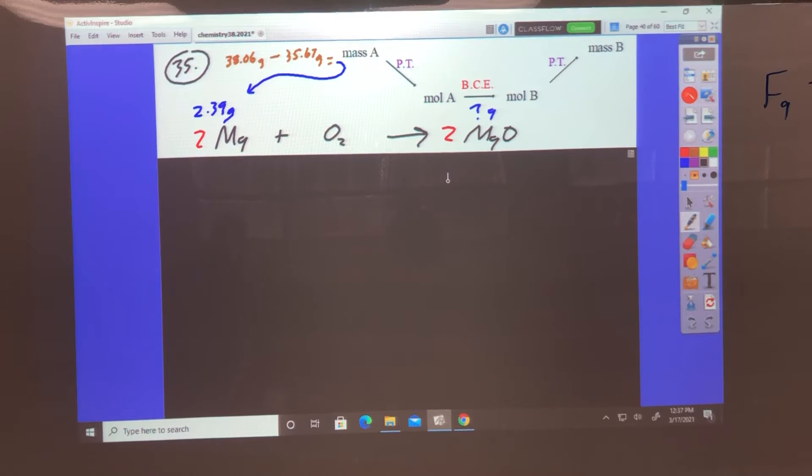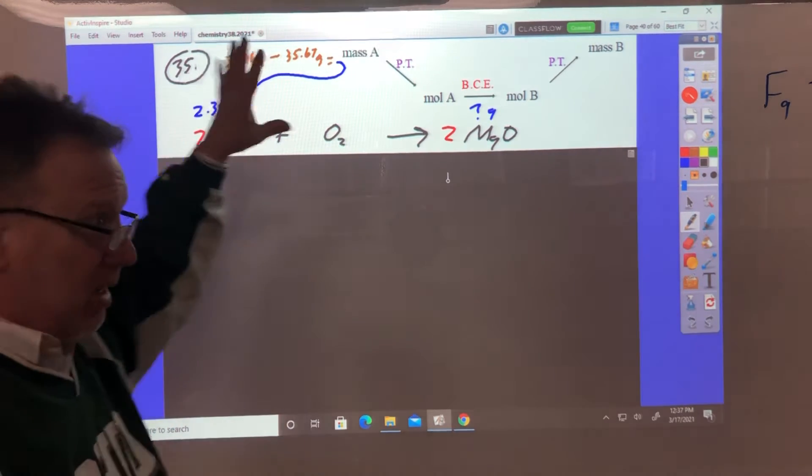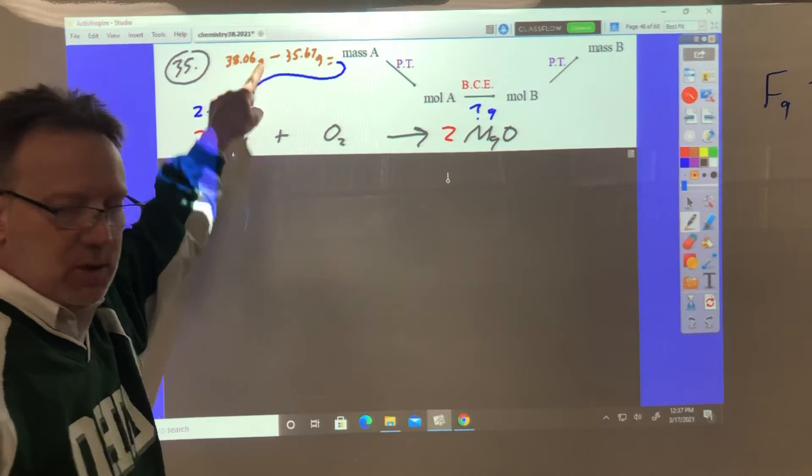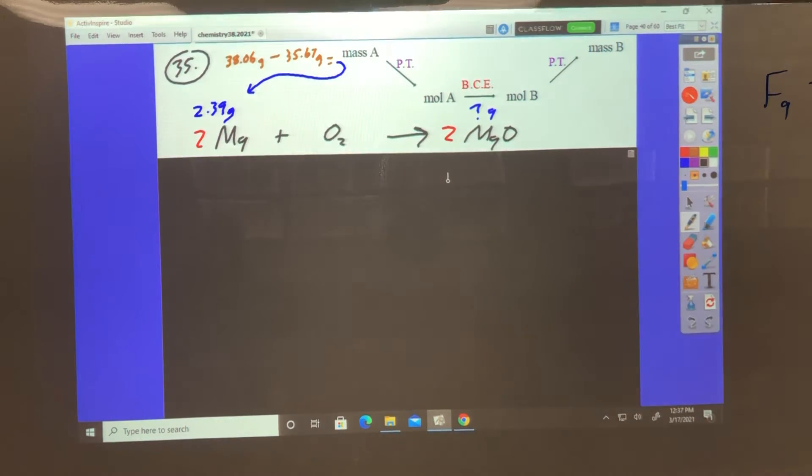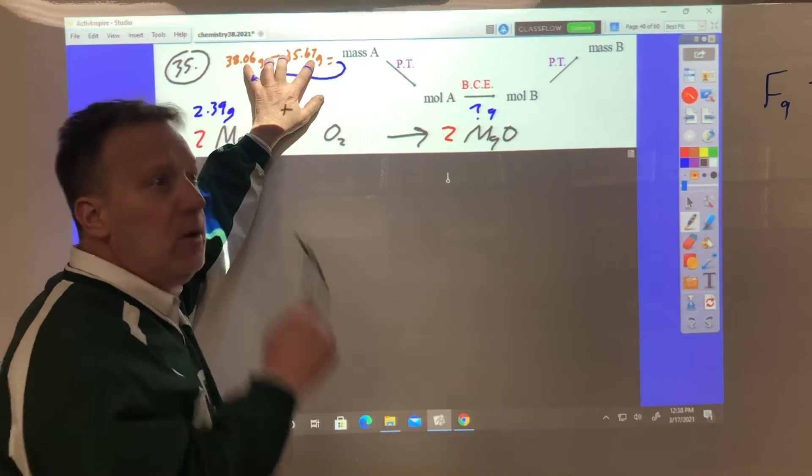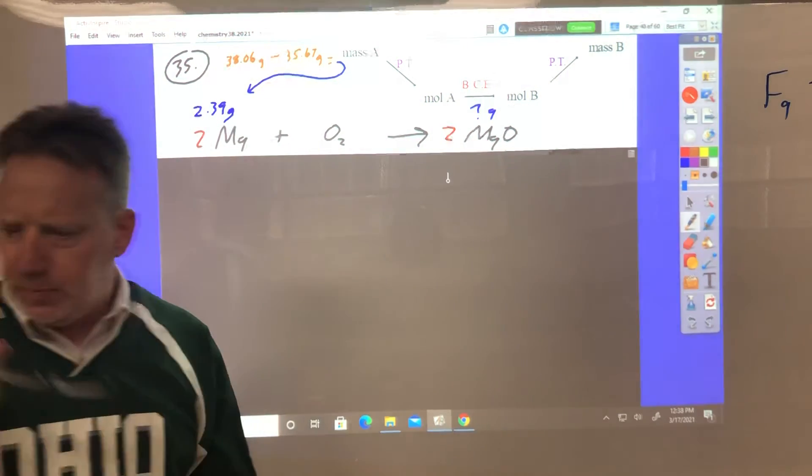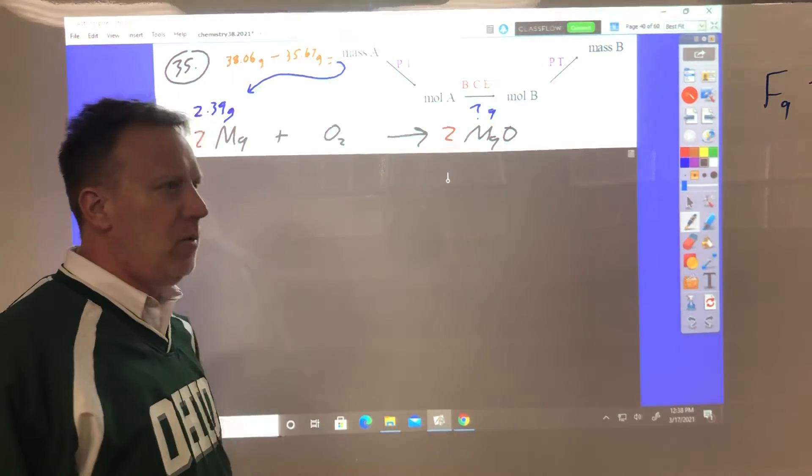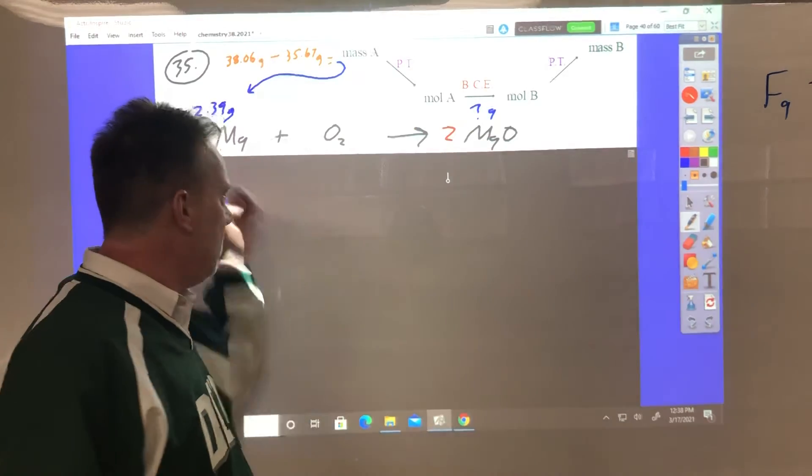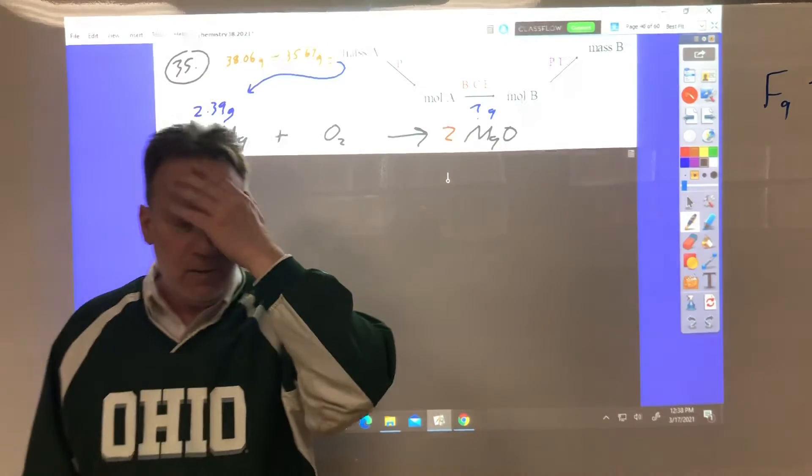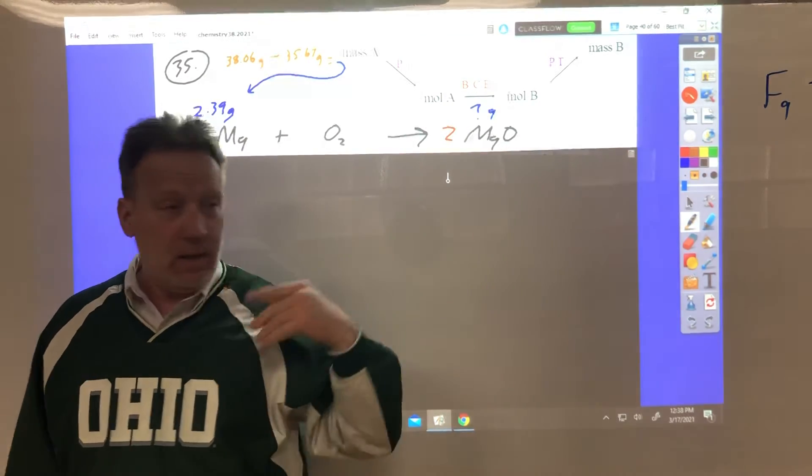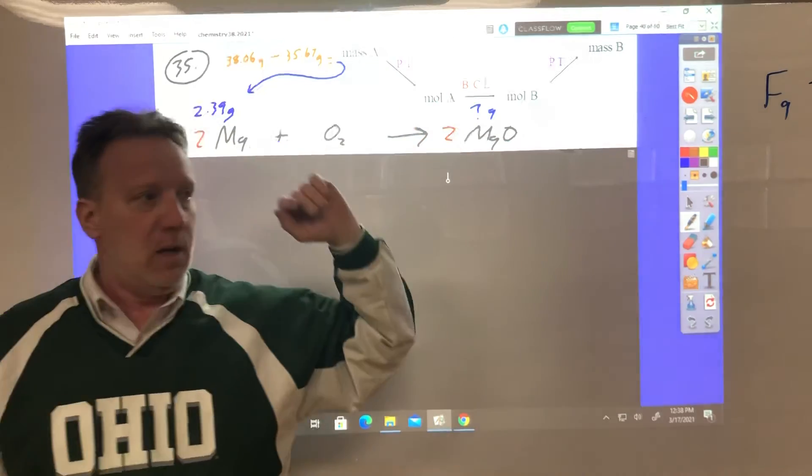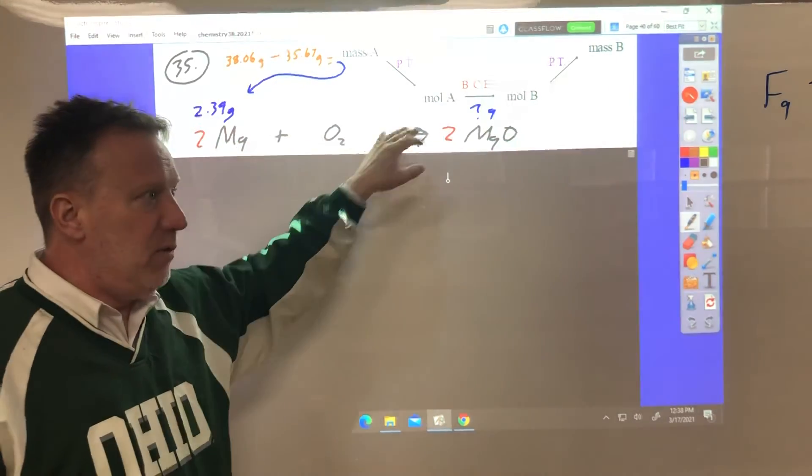On 35, we had a percent yield of the reaction with magnesium with excess oxygen. There's a data table. In the data table, the mass of the crucible and magnesium is 38.06 grams and the mass of the crucible by itself is 35.67 grams. So when you subtract those two, the magnesium must be 2.39 grams. They give you the reaction: magnesium plus oxygen gives you magnesium oxide. A better way to do this on a test is just give you the names, let you figure out the chemical formulas and let you figure out the balanced equations.